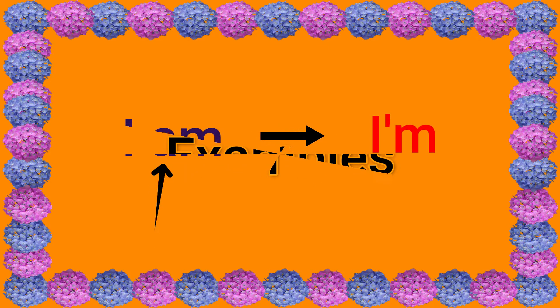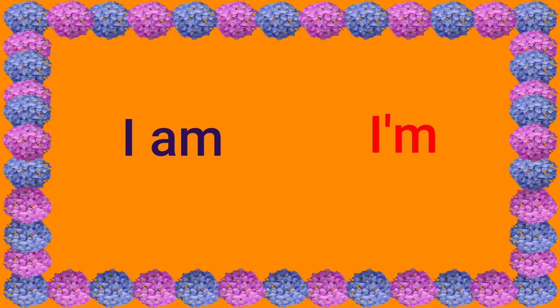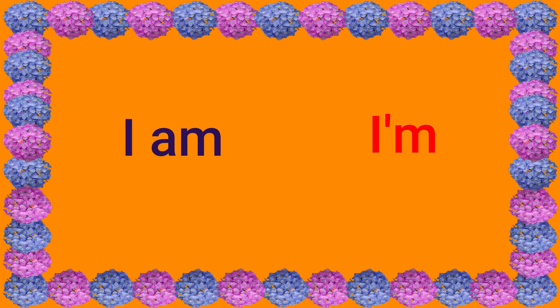I am can be read as I'm. Here you can find the apostrophe after 'I', and the letter 'a' is missing in that place.